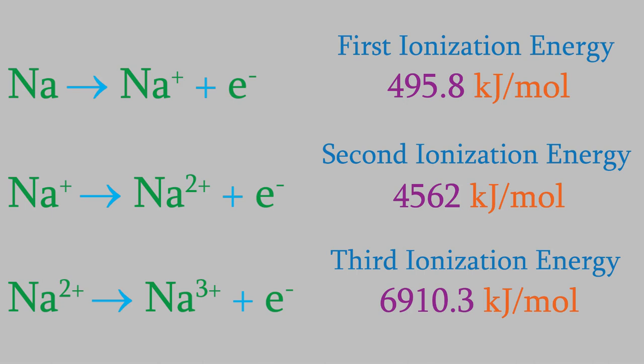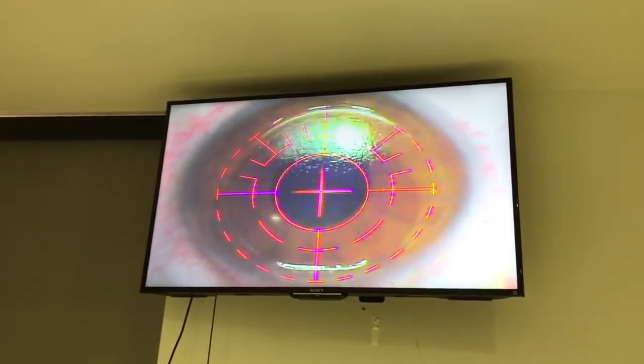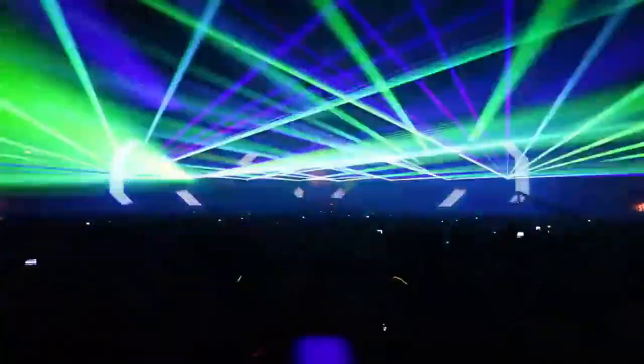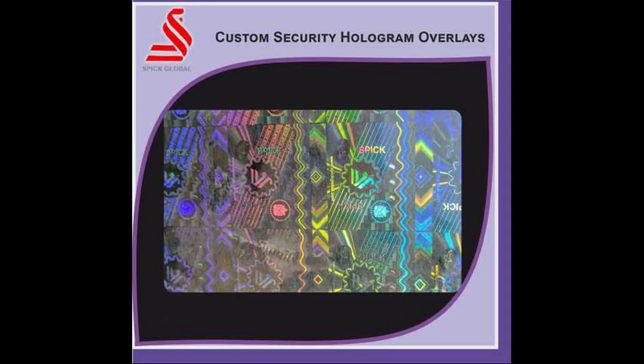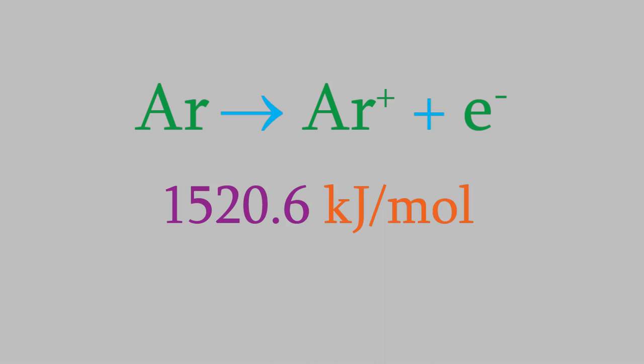So where does this come up? It turns out that some very common lasers use atoms that have been ionized. For example, ions of krypton plus and argon plus are in lasers that have lots of different applications, including LASIK eye surgery, laser light shows, and security holograms, like the ones you sometimes see on expensive packages of electronic equipment or on credit cards. The energy it takes to form the ions used in these lasers is determined by the ionization energy — for example, the energy it takes to form an argon plus ion is its ionization energy, 1520.6 kJ per mole.